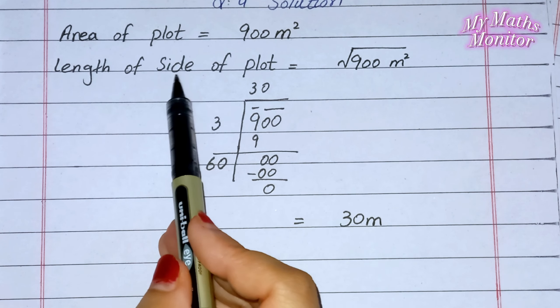Question number 5: 400 students sit in rows in such a way that the number of rows is equal to the number of students in a row. How many students are there in each row? 400 طلبہ کتاروں میں اس طرح بیٹھے ہیں کہ ہر کتار کی تعداد اتنی ہے جتنی ہر کتار میں طلبہ کی تعداد ہے۔ یہاں پہ معلوم کرنا ہے کہ ہر کتار میں کتنے طلبہ ہیں۔